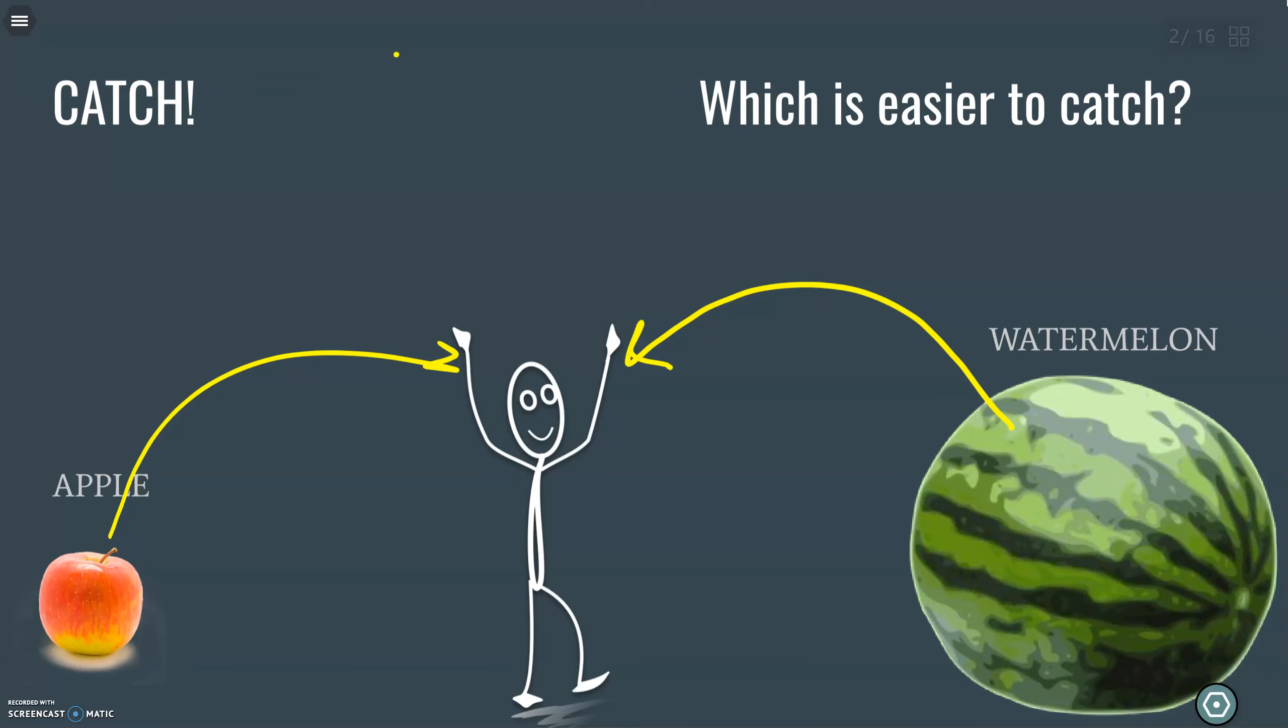Now you have some instincts about this already. You may be leaning toward, hey Mr. J, it's a whole lot easier to catch that apple than that watermelon. This is a tiny little mass, and this is a huge amount of mass, obviously. That makes sense. So far, so good.